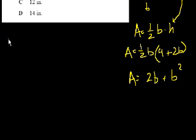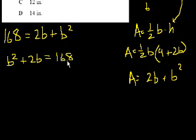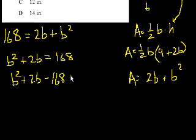So area is 168, which equals 2b plus b squared. Let's swap the sides: b squared plus 2b equals 168. Subtract 168 from both sides, you get b squared plus 2b minus 168 equals 0.